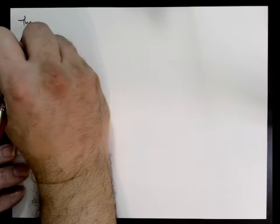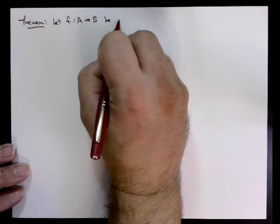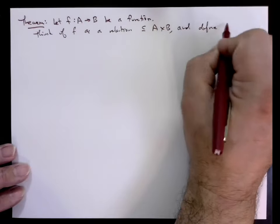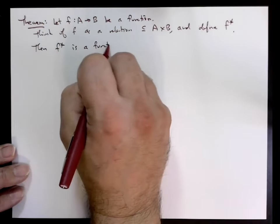We saw that whenever we have a function, we can think of that function as a relation, and we can think about the conjugate of that relation. But when is that conjugate a function? This theorem gives us the answer.